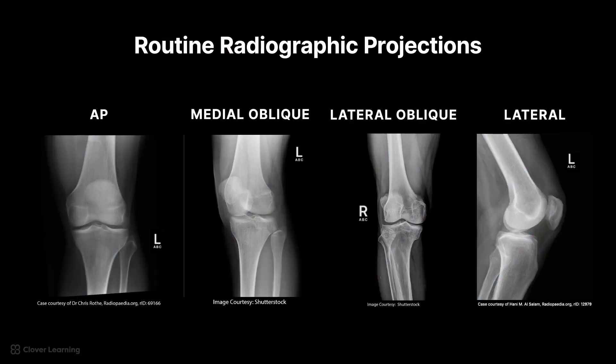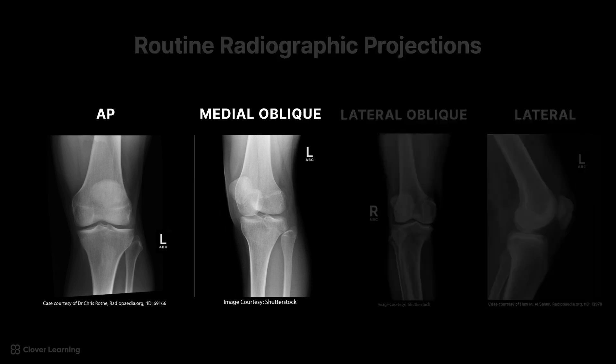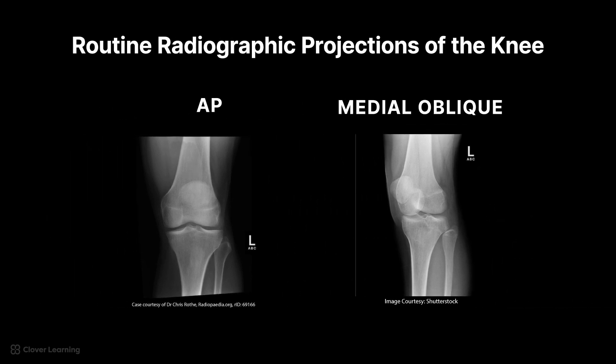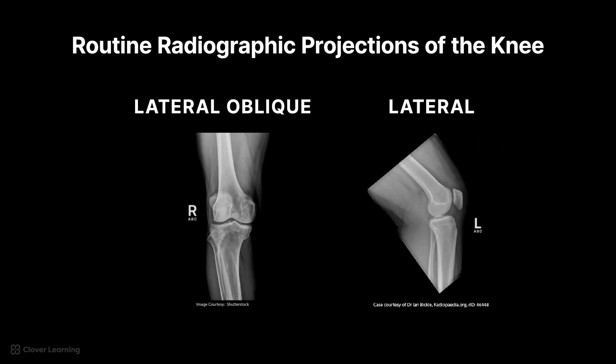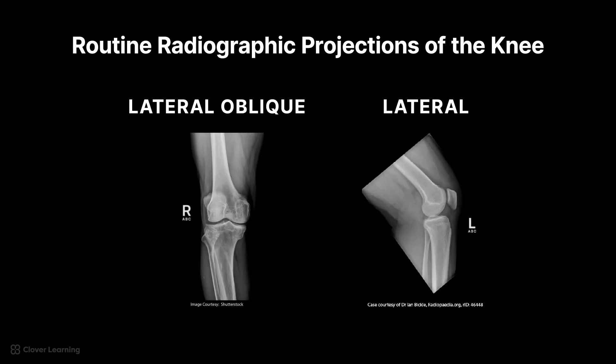The routine radiographic projections of the knee include AP, medial oblique, lateral oblique, and lateral. AP or anteroposterior projection means the beam enters the anterior portion and exits the posterior portion. The medial oblique means the leg is rotated internally. The lateral oblique projection means the leg is rotated externally. The lateral projection of the knee is a mediolateral, which means the beam enters the medial portion and exits the lateral portion. The distal femur, entire knee joint, and proximal tibia and fibula must be demonstrated on all projections.